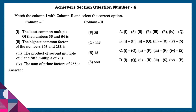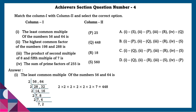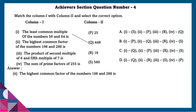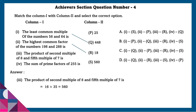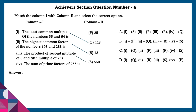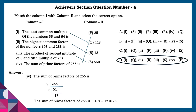Achieve section question number 4: Match column 1 with column 2 and select the correct option. The LCM of 56 and 64 is 448. The HCF of 198 and 288 is 18. The product of the second multiple of 8 and fifth multiple of 7 is 560. The sum of prime factors of 225 is 25. Matching these will give the answer as option D.